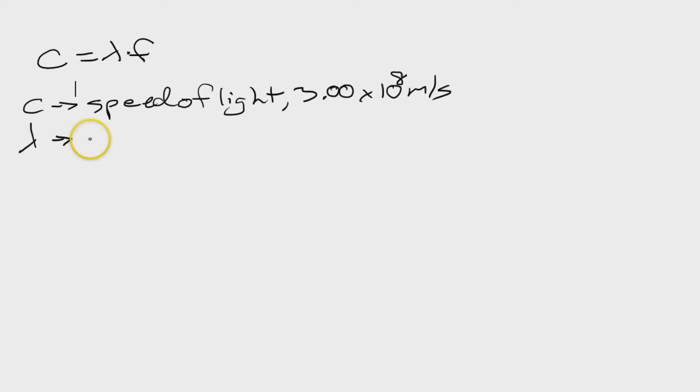Lambda here is wavelength, as we already know. Wavelength is a length, right? So it's going to be measured in meters, which is abbreviated with a lowercase m. And then we've got F. F is frequency, as we already mentioned. Frequency is measured in hertz, which is abbreviated as capital H, lowercase z.